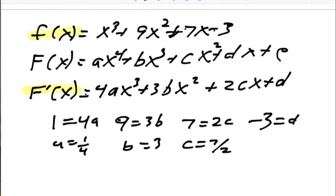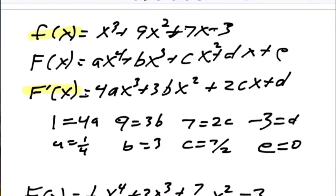Minus 3 is equal to d, and I can take anything I want for e so I'm going to do the easiest one and let e equal 0.